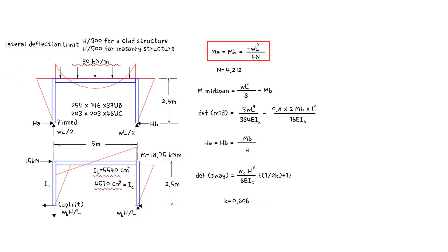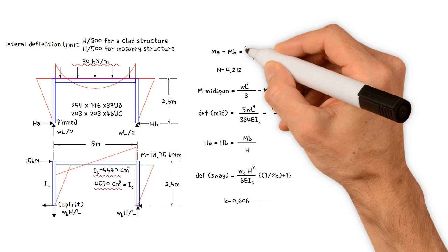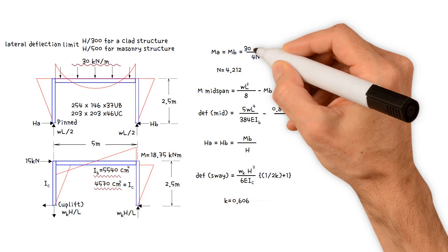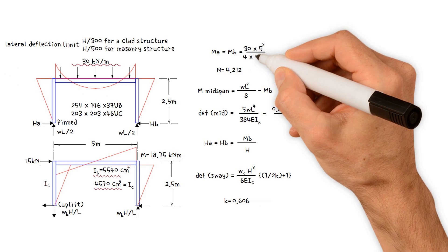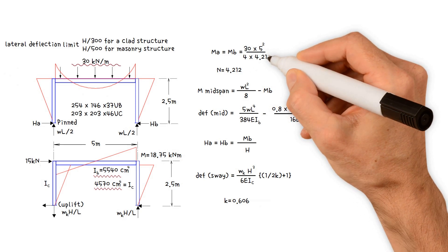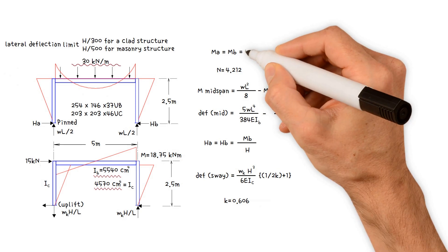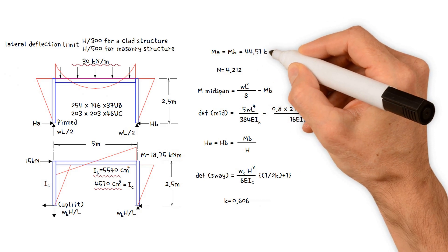Consequently, beam end moment equals the vertical loading on beam of 30 kilonewtons per meter times span squared which is 5 meters squared divided by 4 times 4.212. This gives us a value of 44.51 kilonewtons meter.